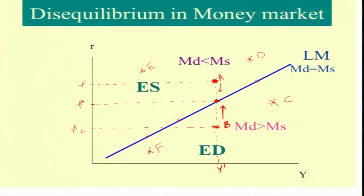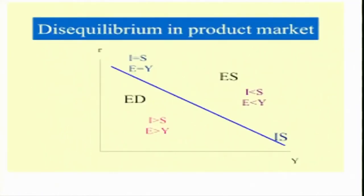In all these cases, if there is a point above the LM curve there is a downward pressure on the rate of interest, and below the LM curve there is an upward pressure on rate of interest, so that money demand equals money supply. Now look at the IS curve.